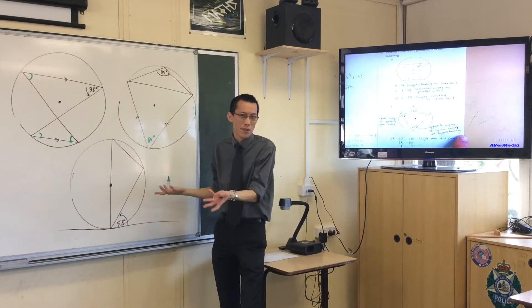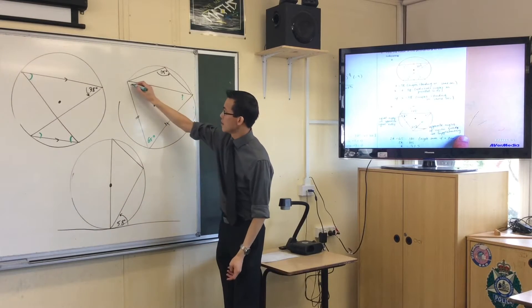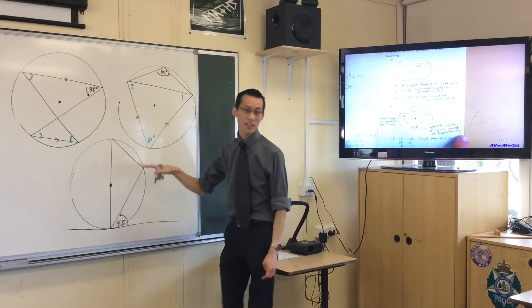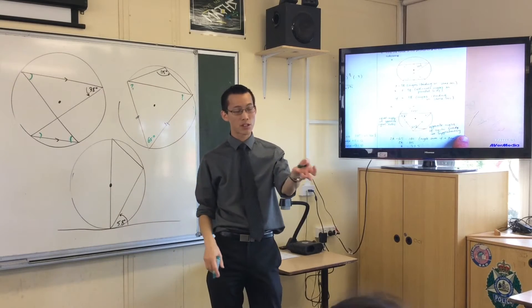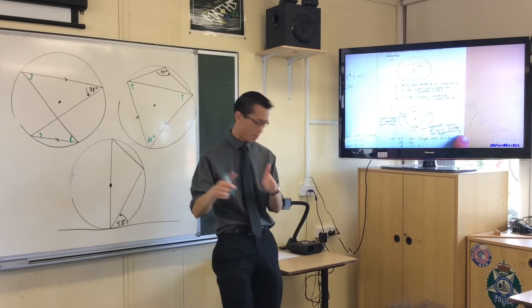Once you've got that 65, it's trivial from there because you've got the isosceles triangle. So I think this is your unknown. So 2k plus 65, that'll give you the angle sum of a triangle. And my answer is 57 and a half. Is that right? Yeah. Okay, great.